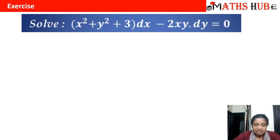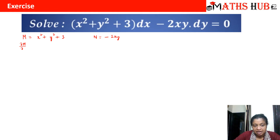First let us identify our M and N. Here M is x² + y² + 3 and N is −2xy. Let us calculate ∂M/∂y and ∂N/∂x. So ∂M/∂y is 2y and ∂N/∂x is −2y.